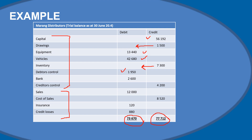Debtors control is correct. For bank, we have to look for additional information because bank can either be a liability or an asset — so I can't judge whether the balance is on the right side without more context. Creditors control is a liability and should have a credit entry. Sales is income that increases equity, so it should be on the credit side. Cost of sales is an expense and decreases equity. Insurance is an expense and should be on the debit side, and so are credit losses. So I have first evaluated the debit and credit sides before looking at the adjustments.